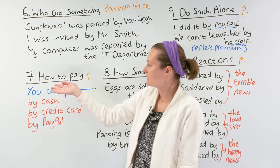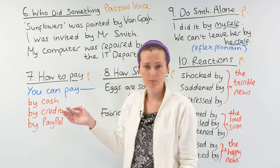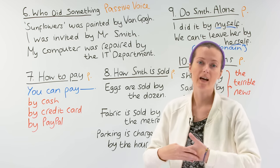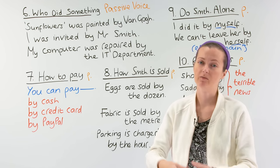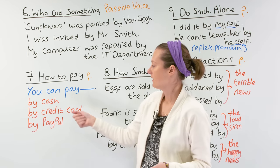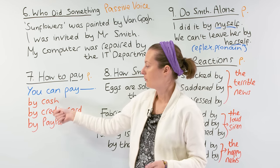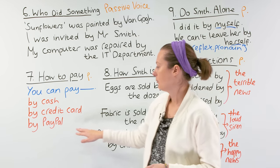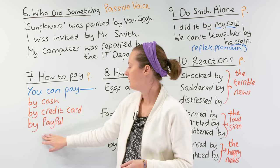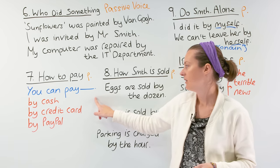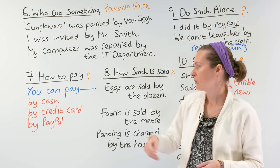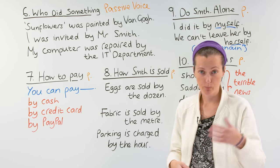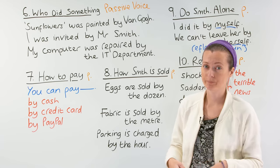Next, let's look at using 'by' as a preposition when we're talking about how to pay for something. We can say by cash, by credit card, by PayPal. You can pay for your computer by cash or by credit card in this store.